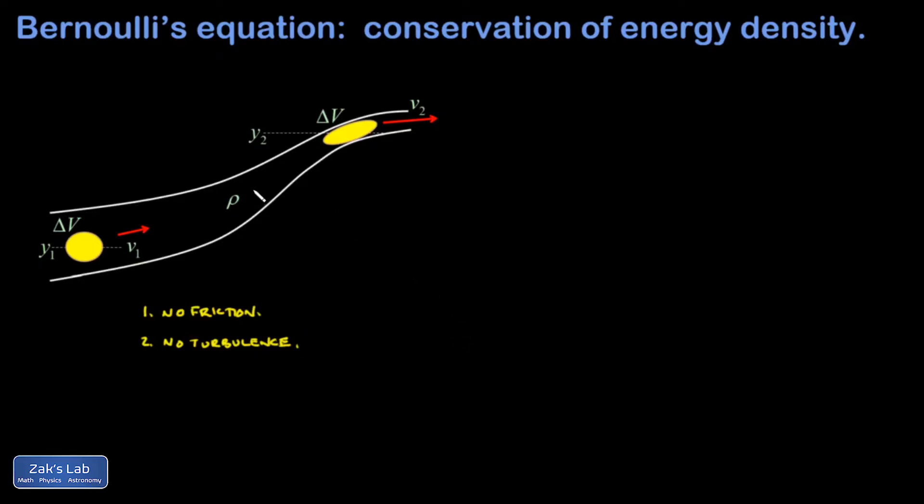What I've highlighted in the graph here is just a little blob of the fluid, and I want to track what happens to it as it moves from point 1 to point 2. My claim here is that the total amount of energy in that blob is going to be the same at point 1 and point 2, since there's no way to lose energy in this ideal fluid.